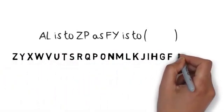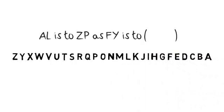Now you know that, the rest is easy. Write down the alphabet backwards underneath the alphabet you are given at the top. F is U in the mirrored alphabet and Y is B in the mirrored alphabet, so the missing letters are U-B. A-L is to Z-P as F-Y is to U-B.